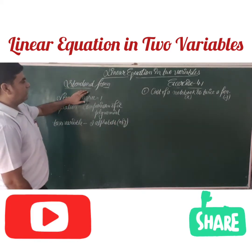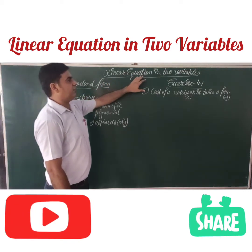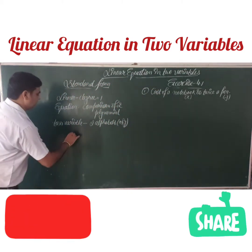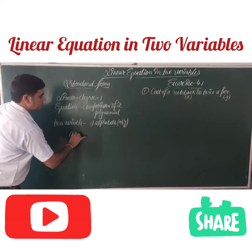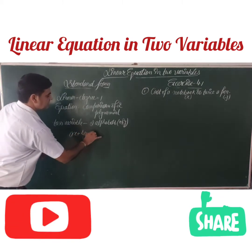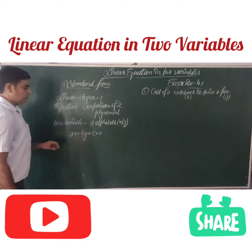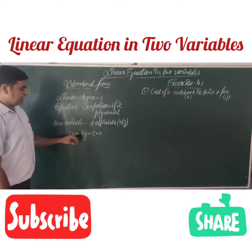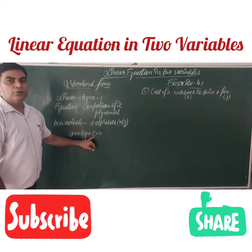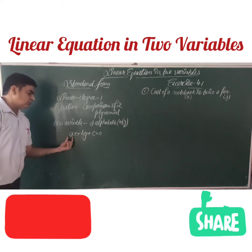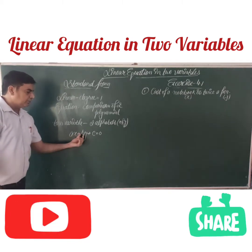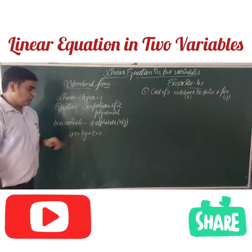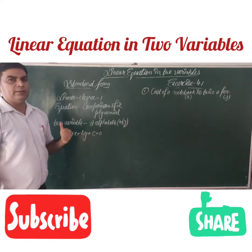First of all, what is the standard form of a Linear Equation in Two Variables? Our standard form is given by ax plus by plus c is equal to 0. Here, x and y are known as variables, and a, b, c are all known as constants. Where a is the coefficient of x, b is the coefficient of y, and c is the constant term. All terms should be on the same side.